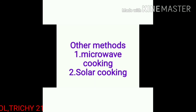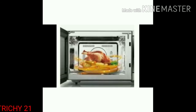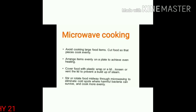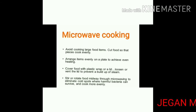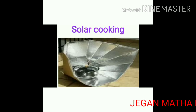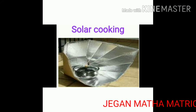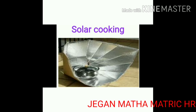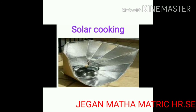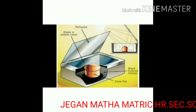Next, microwave cooking and solar cooking. This is an example of microwave cooking. It avoids cooking large food items. Arrange items evenly on a plate to achieve even heating. Cover food with plastic wrap or a lid, and loosen the lid to prevent a build-up of steam. Solar cooker is a device which uses the energy of direct sunlight to heat, cook, and prepare food materials.